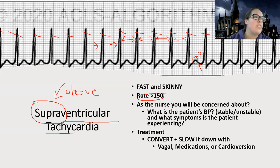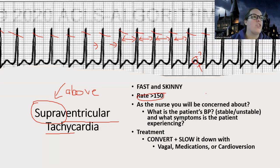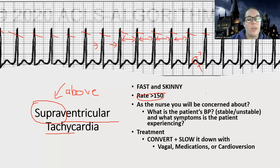What's going on in SVT is the heart gets irritated. It commonly happens because of caffeine, stress, fluid and electrolyte imbalances, things like that. What's happening is the heart is racing and moving faster than it's supposed to. Again, we worry about really fast rhythms because there's not time for filling.